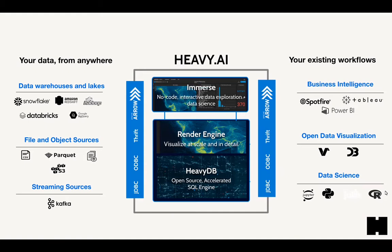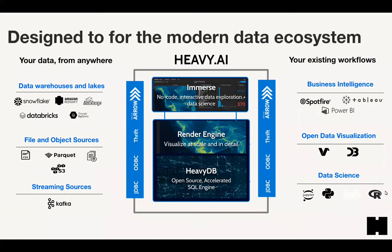To make the technology useful, you've got to get data in and out and collaborate with other tools. We use industry standards to accept data from many different sources, including data warehouses, data lakes, raw files, and streaming sources, using protocols like JDBC, ODBC, Thrift, and Arrow. On the output side, we connect to business intelligence tools, open data visualization frameworks, and data science tools like Jupyter Notebooks that are tightly integrated.